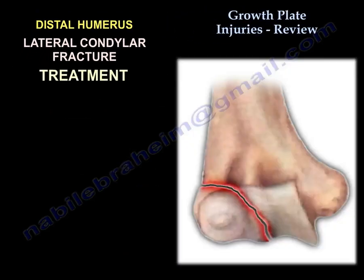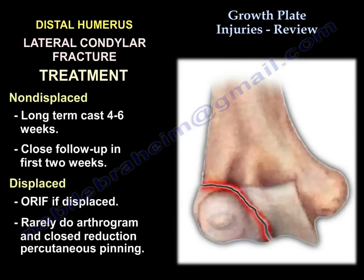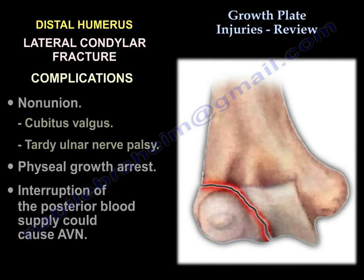Treatment: for non-displaced fractures, apply a long arm cast for 4–6 weeks with close follow-up in the first two weeks. If displaced, perform arthrogram and closed reduction with percutaneous pinning, though open reduction may be needed. Complications include non-union leading to cubitus valgus and tardy ulnar nerve palsy, physial growth arrest, and AVN from interruption of the posterior blood supply, especially if surgery is performed.